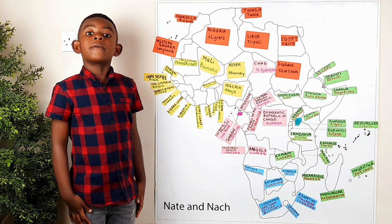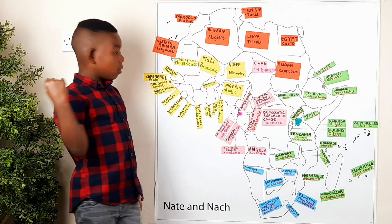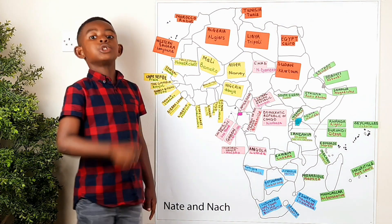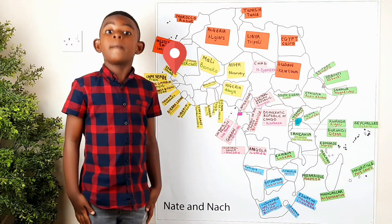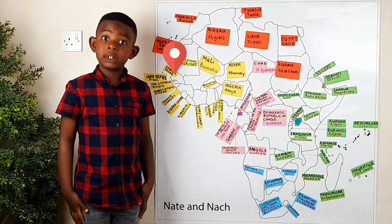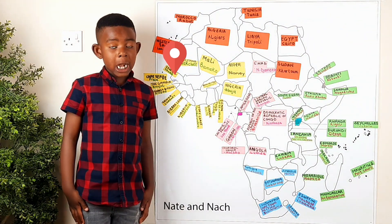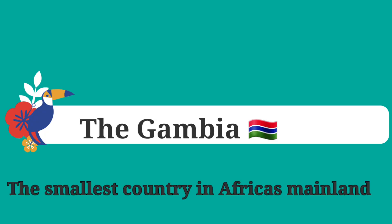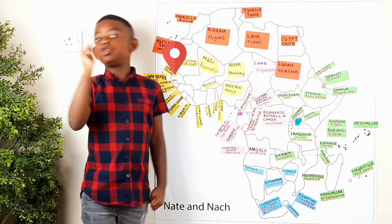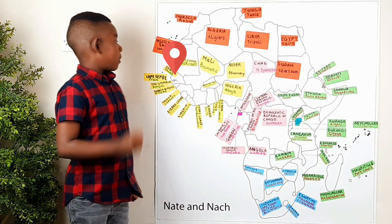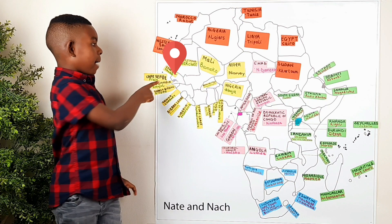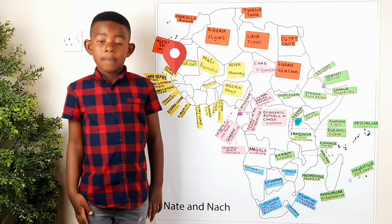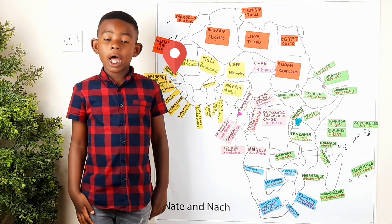Also, we have got the smallest country in the African mainland and it's found in Western Africa too. It is called the Gambia. The capital is Banjul. The Gambia is surrounded by Senegal.